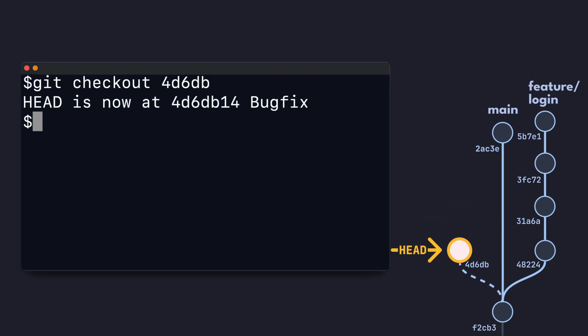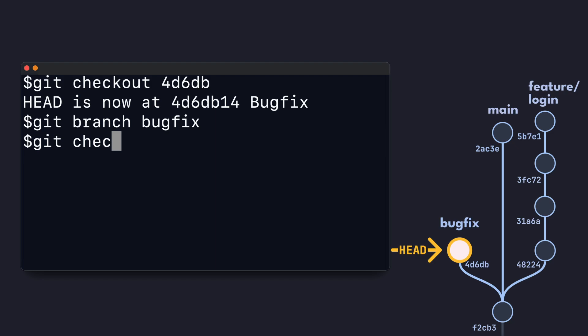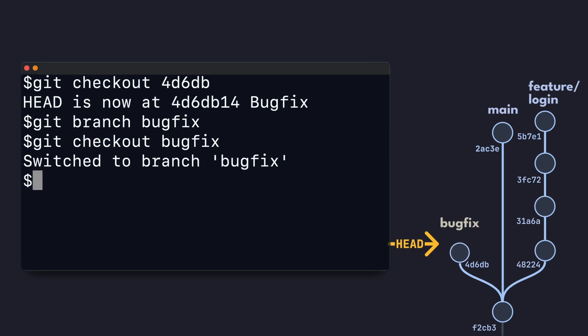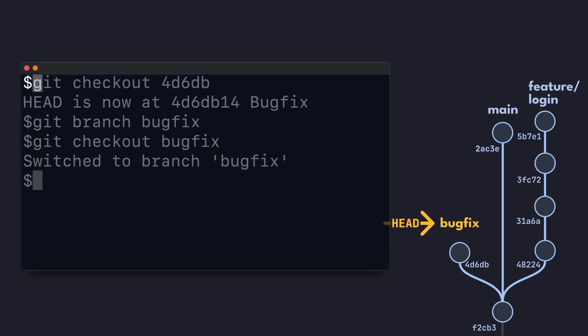To prevent this from happening, we should just create a new branch for the new commit. This will also get us out of the detached head state. To do that, we just run the git branch command in the detached head state to create a new branch from the current commit. Now we just have a regular old branch to work with, and we can switch to it to get out of the detached head state.